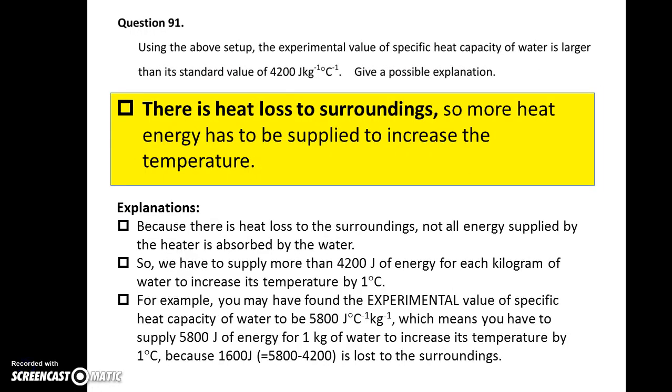Question 91. The experimental value of specific capacity is larger than the standard value of 4200 J per kg per degree Celsius. Give a possible explanation. There is heat loss to the surroundings. So you have to give more energy than is required to the water. And part of the energy is lost to the surroundings.